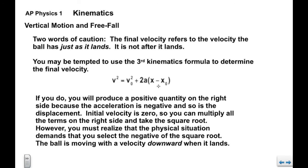You may be tempted to use the third kinematics formula to determine the final velocity because we have initial velocity, A, and we have the initial and final positions. If you do, this quantity which is the displacement is going to be negative and the A we know is negative. So this will produce a positive quantity. The V0 is zero, this is going to go away. So we're going to have a positive quantity here. And then you take the square root to solve for the final velocity. It's easy to forget that when you take the square root of a positive number the answer is plus or minus whatever the square root is. In this case, the physical situation demands that you select the negative of the square root. And again, that's knowing that the ball is moving with a velocity downward when it lands. So the sign convention tells us that it's negative. Technically we have two answers here, positive and negative. We select the negative one because it makes physical sense.